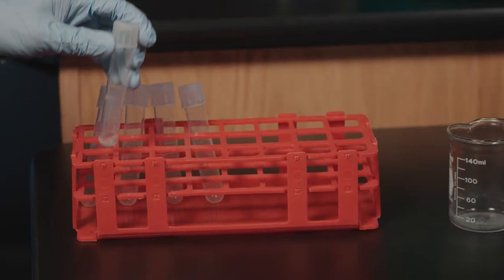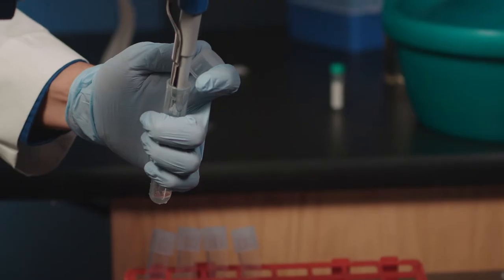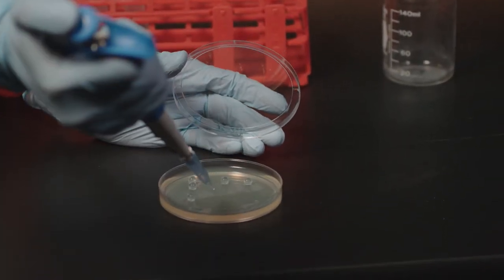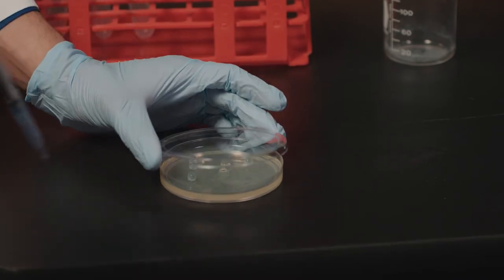Transfer 100 microliters of cells from your transformation tube onto a petri dish containing 4 to 6 glass beads. Then use a back and forth shaking motion to spread the glass beads across the plate. Do this for 3 to 5 minutes.